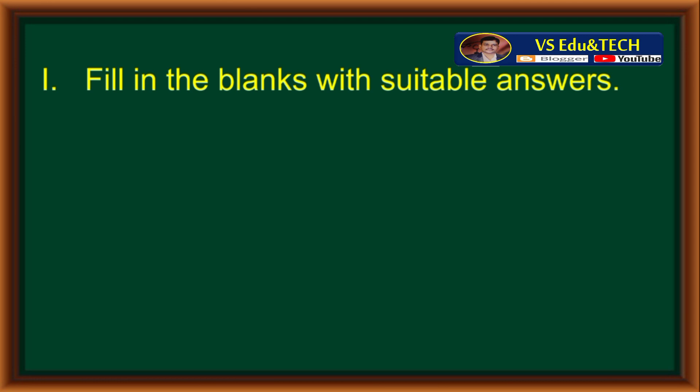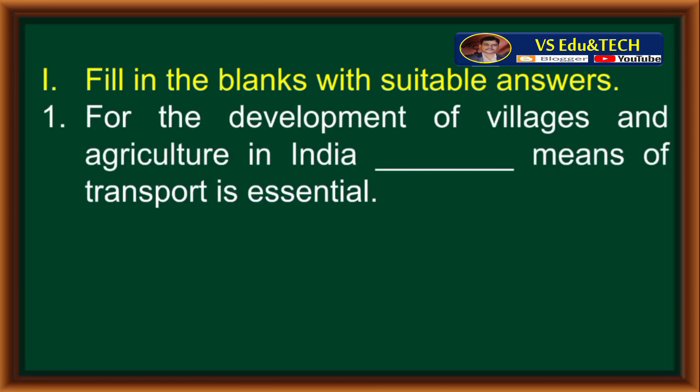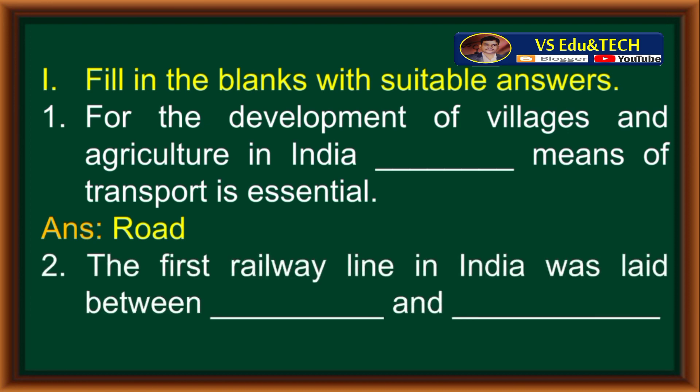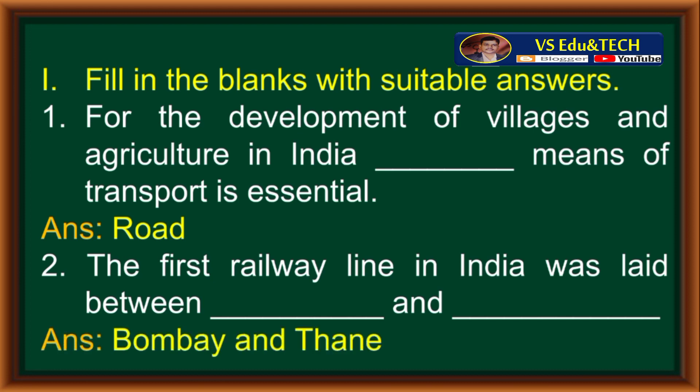First main: fill in the blanks with suitable answers. First one: for the development of villagers and agriculture in India, the blank means of transport is essential. Answer: Road. Second one: the first railway line in India was laid between blank and blank. Answer: Bombay (Mumbai) and Thane.